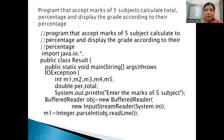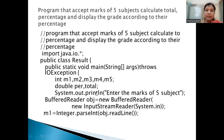Now I need 5 variables, so I declared int for 5 variables. Then I need percentage and total, so I created a double type variable with names 'per' (percentage) and 'total'. Then System.out.println — when we take input from the user, the user should understand what is going on, so we display the message: 'Enter the marks of 5 subjects'.